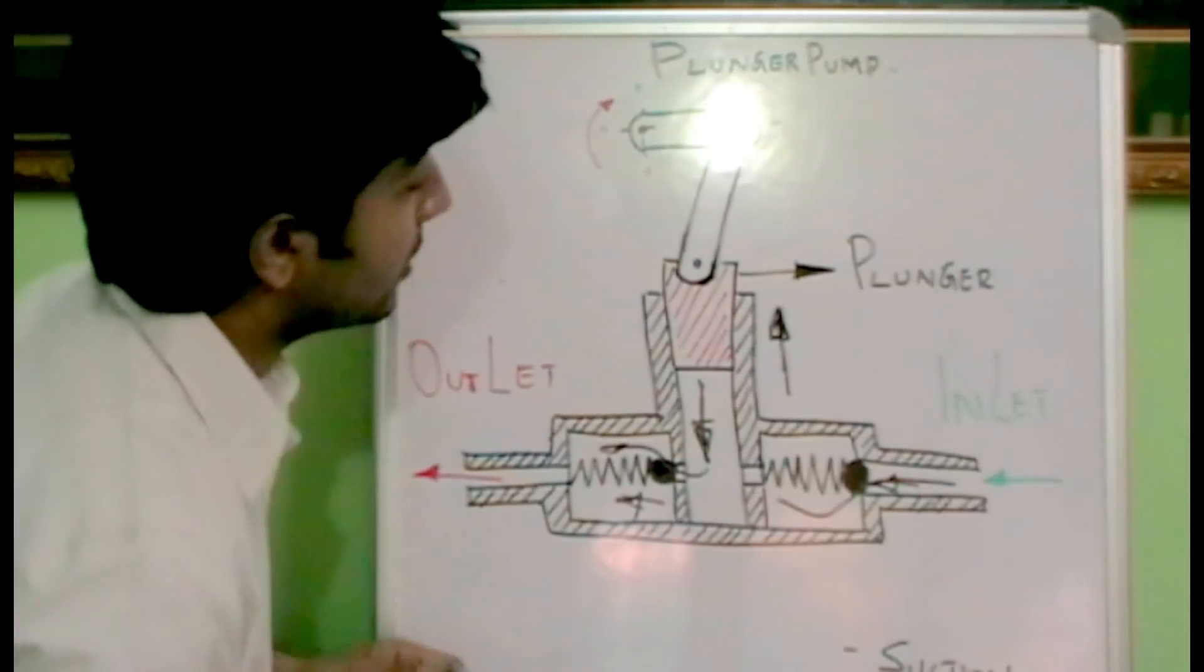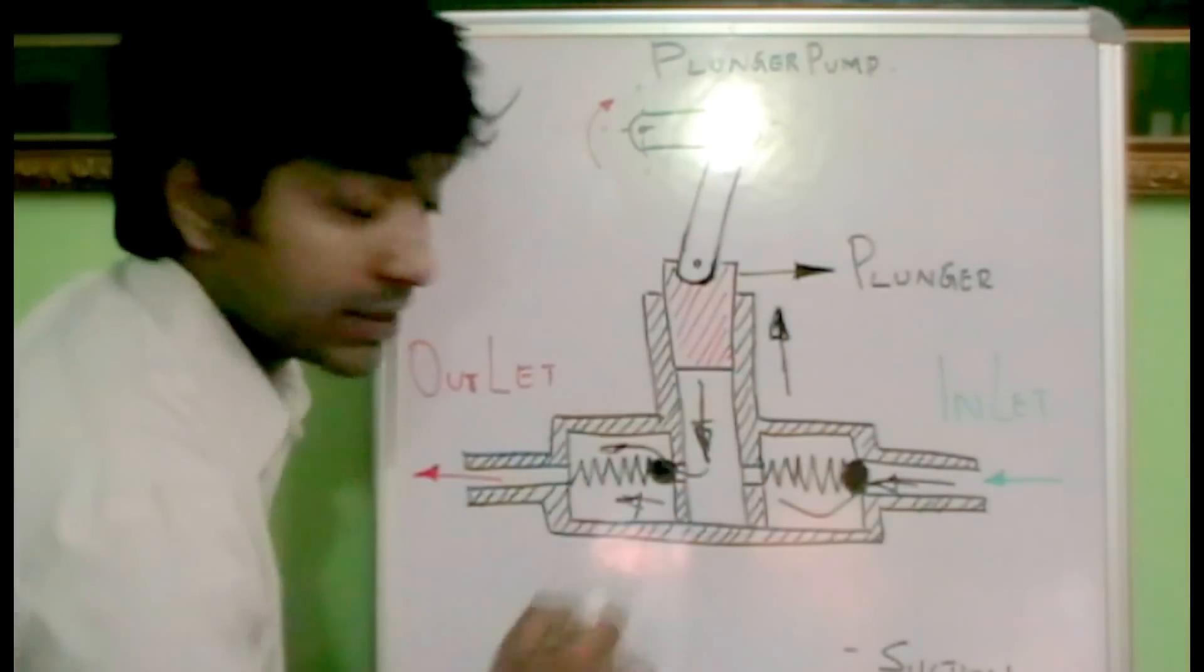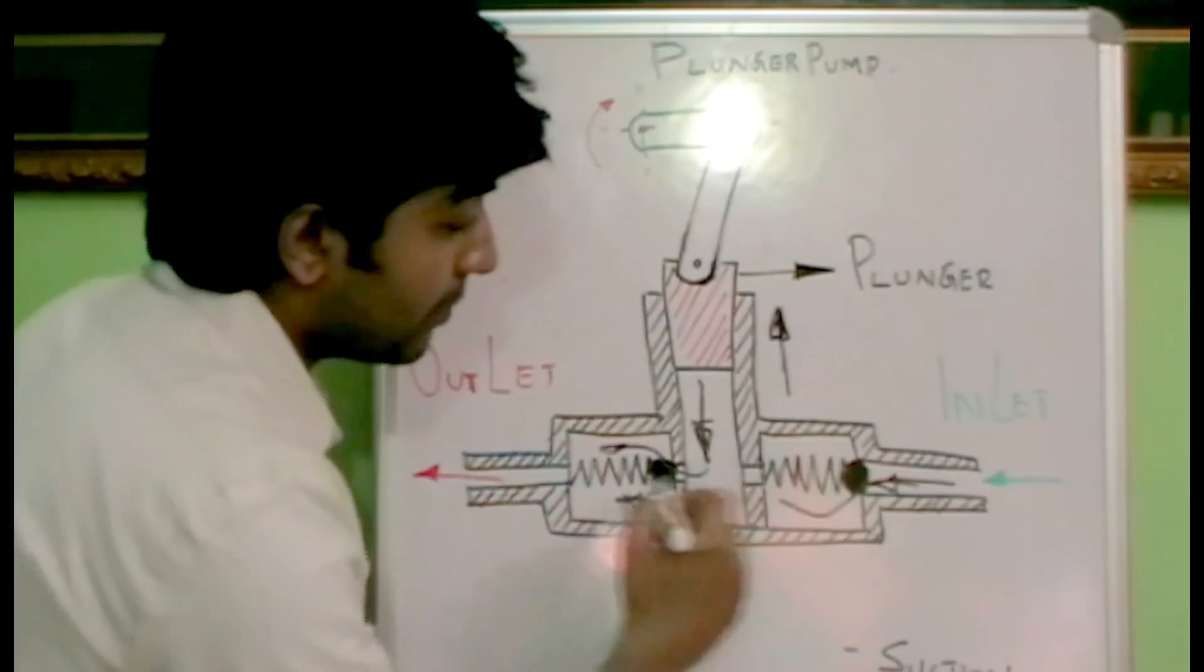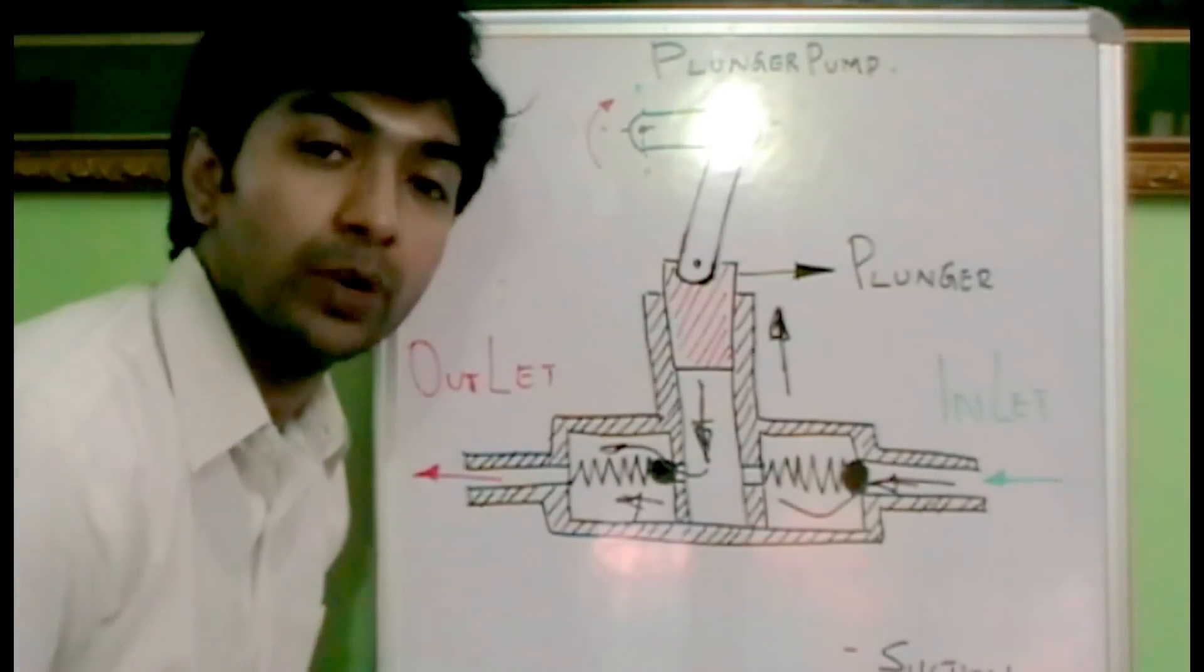The main components of the plunger pump are the plunger, marked in red, and the inlet and outlet ports with two valves. They are one-way valves that can open only in one direction.